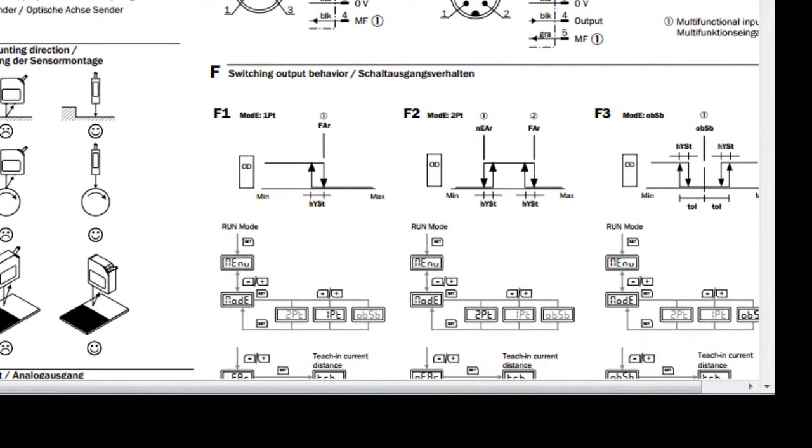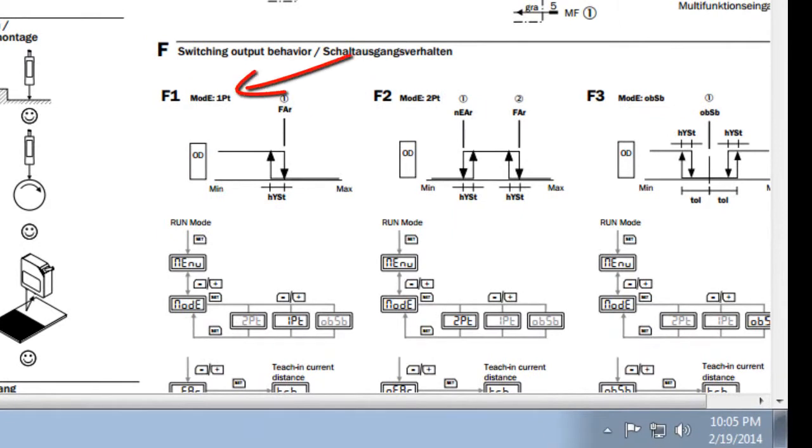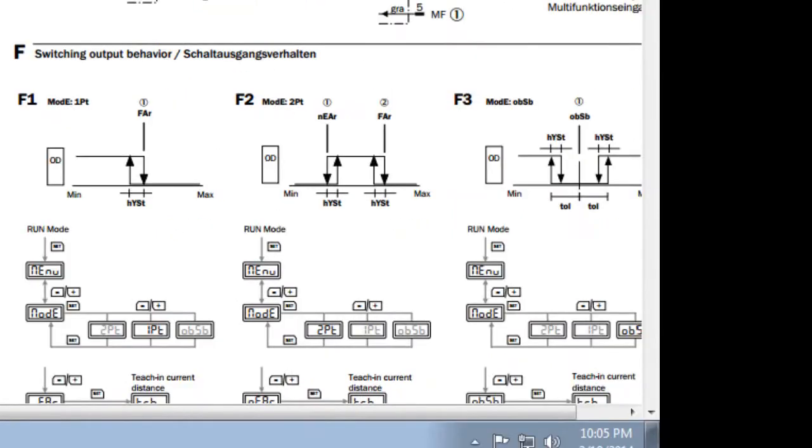So we have a couple different modes we can do our switching output. We have mode for one point teach. So you just want to know if something is at a certain distance or closer. Give me an output. The other one will be a two point teach. That's a window mode. So you have a near and a far that you need to teach. And then there's a third mode called this OBSB mode. That is object between sensor and background is what the acronym is. And we'll actually handle that in a separate video on advanced functions.